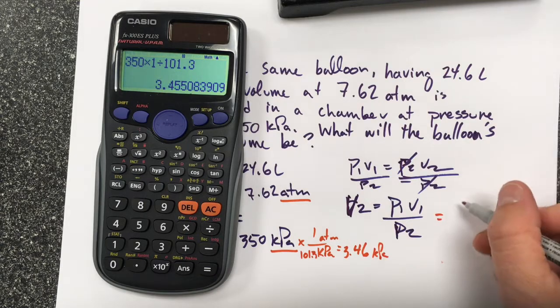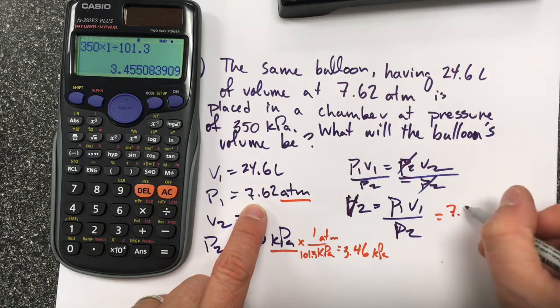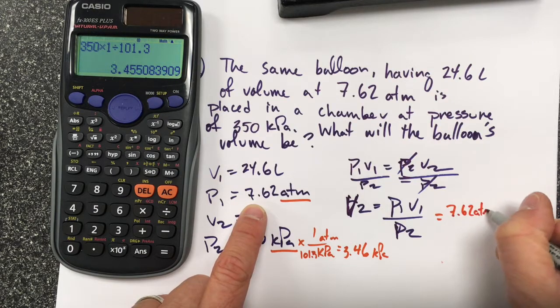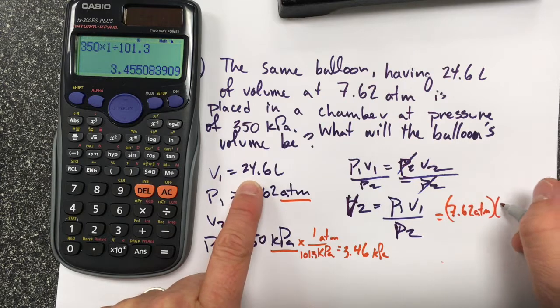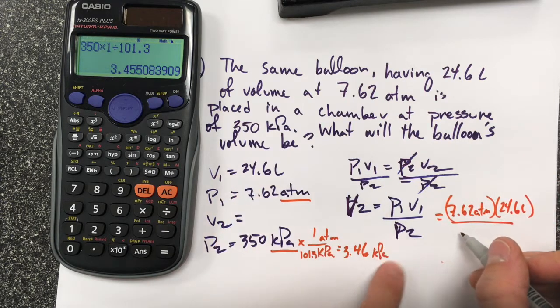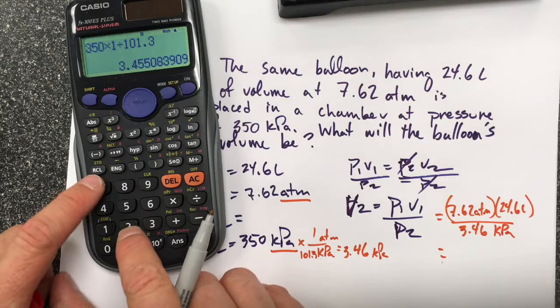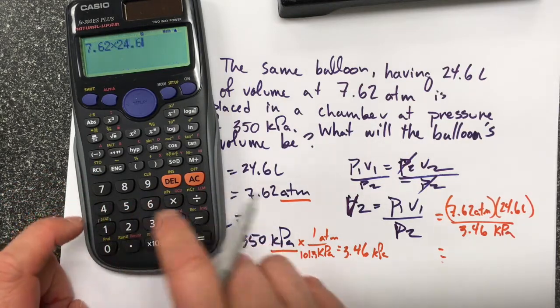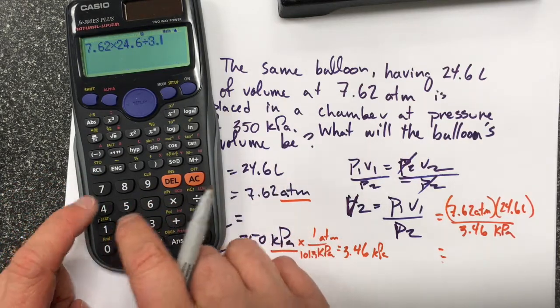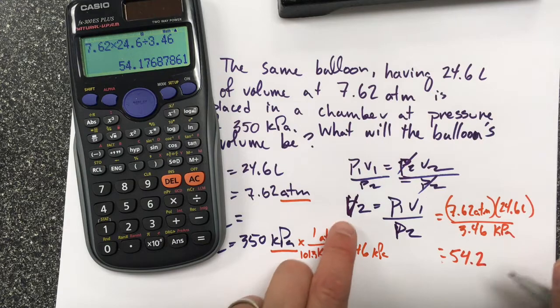So when I substitute in, my pressure 1 is 7.62 atm. My volume 1 is 24.6 liters, and my pressure 2 is 3.46 kPa. So I take 7.62 times 24.6 divided by 3.46, and it gives me 54.2 liters.